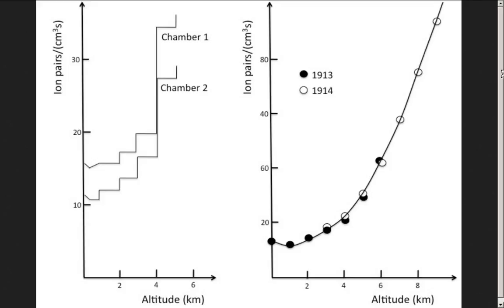Altitude in kilometers over here, ion pairs done a different way using a chamber to test it. I'm pretty sure it's a cloud chamber. The point is you get a sudden increase at about 4 kilometers, depending on how you're measuring it.